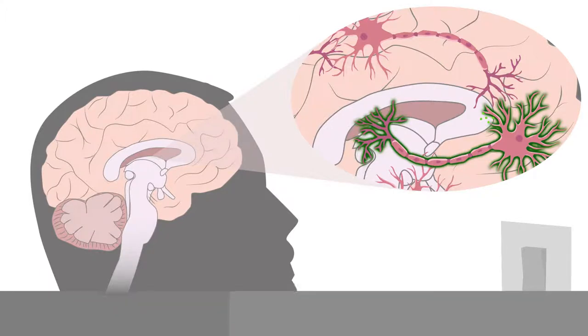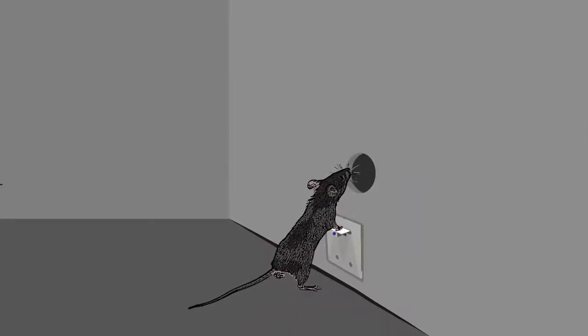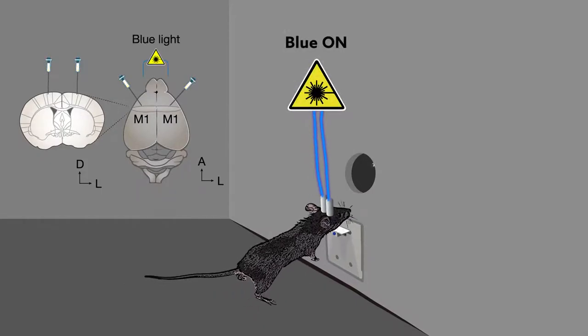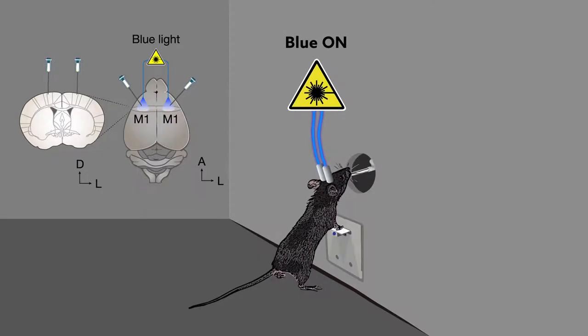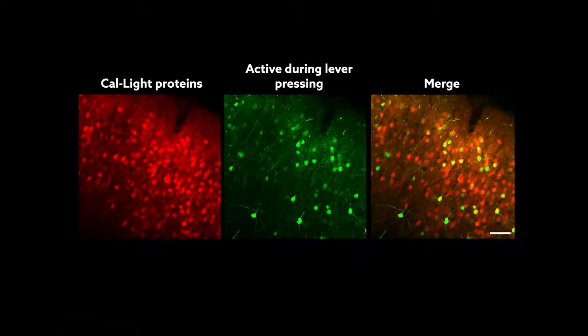The scientists first used CalLite to identify motor cortex neurons responsible for lever-pressing behavior in mice. They added the CalLite proteins to the motor cortex of thirsty mice, then shined blue light as the mice pushed a lever to get a drink. This procedure labeled a small group of neurons as active during lever-pressing.